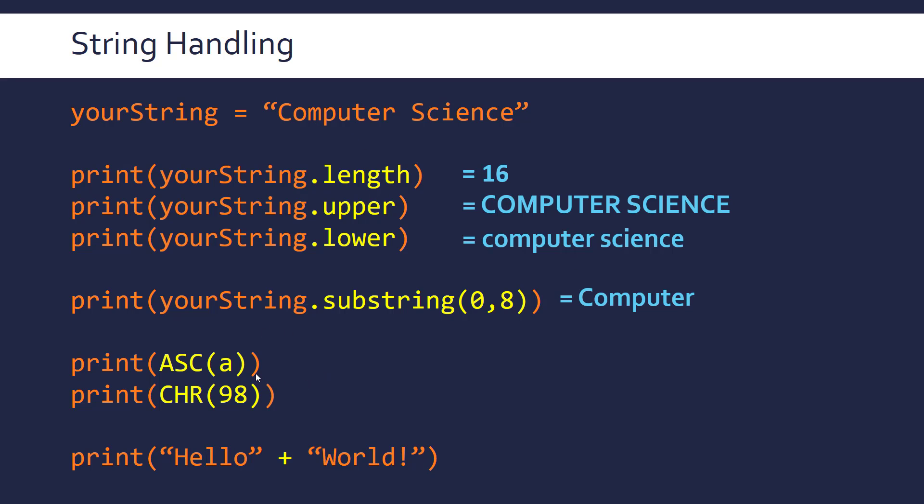To find what the ASCII character code is for a specified character, so lowercase, say in this example, you'd use something like this. It's a function like this, and in this case it's 97. And to do the opposite process, to give it a character code and find the corresponding character, you would do an operation like this. So this is pseudocode, by the way, this is just an example of what you might use. And this returns B because they're sequential. So 97 is A, and 98 is B, 99 is C, and so on.